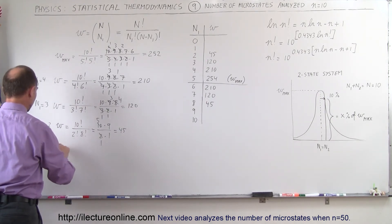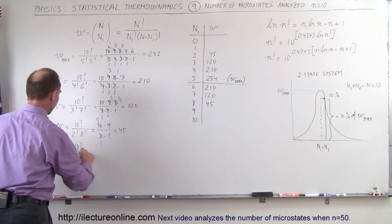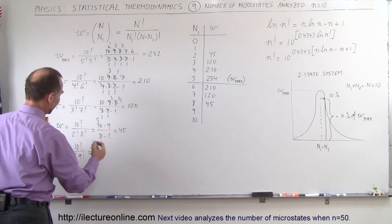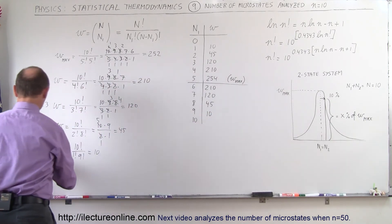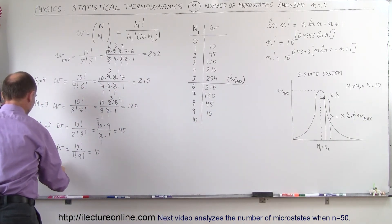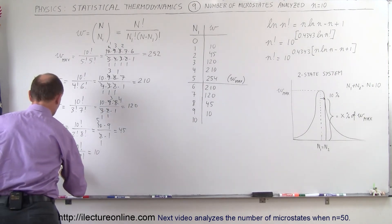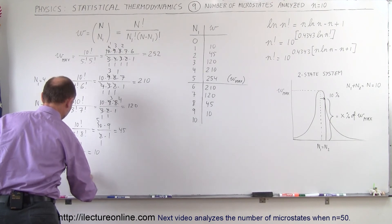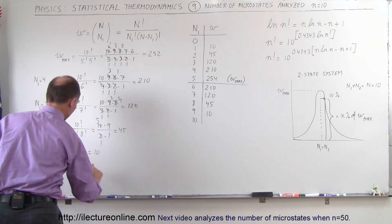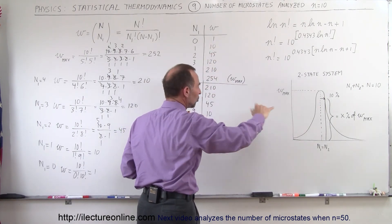For n1 equals 1: the number of microstates is 10 factorial divided by 1 factorial times 9 factorial, which equals 10. And when n1 equals 0 — meaning all objects are in the second state — the number of microstates is 10 factorial divided by 0 factorial times 10 factorial, which equals 1 by definition. So we have 1 and 1 at the edges. That completes the distribution curve.